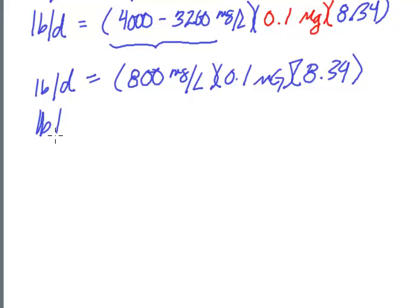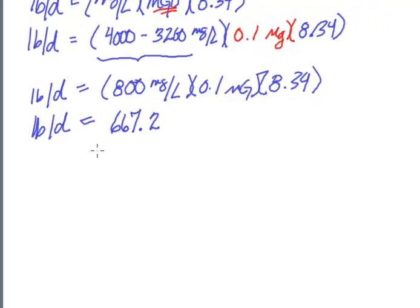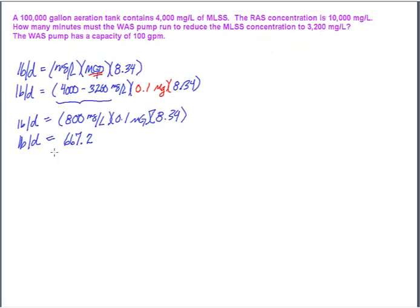The pounds per day that I actually want to remove from the system, I'm going to pop this into the calculator. 800 times 0.1 times 8.34. It looks like I want to remove 667.2 pounds, and I'm going to leave the 0.2 in there. Just punch it in twice, 800 times 0.1 times 8.34. Coming up with the same number, 667.2 pounds.